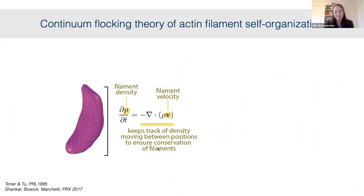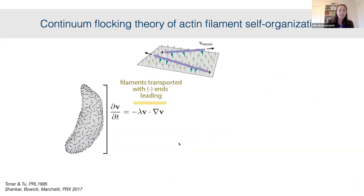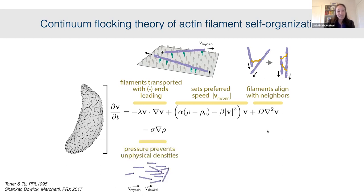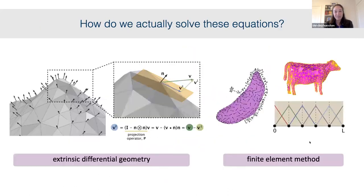We consider a regime where actin filaments are stable, using the continuity equation to enforce filament conservation. The filament velocity field evolves according to four local rules: filaments are transported minus-end leading at the speed myosin motors walk; filaments align with their neighbors due to cross-linking and steric effects; a pressure-like term prevents unphysical densities; and a penalty for high curvature causes filaments to relax from high-curvature to low-curvature orientations.